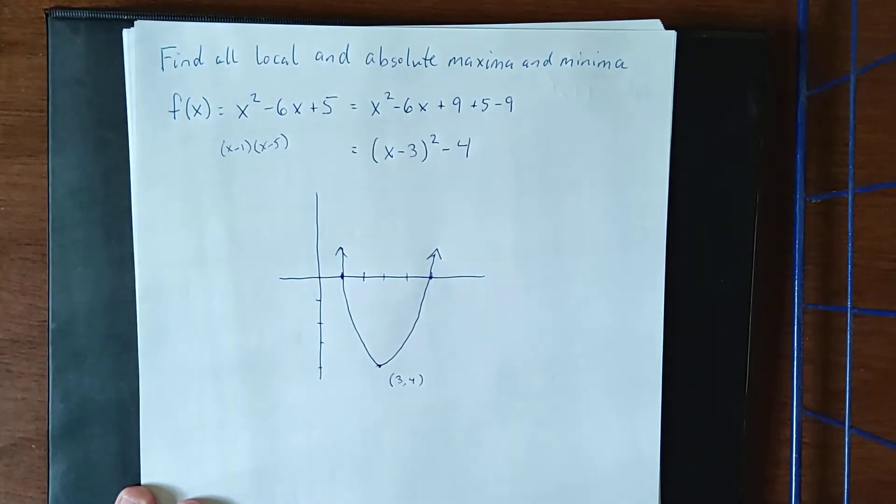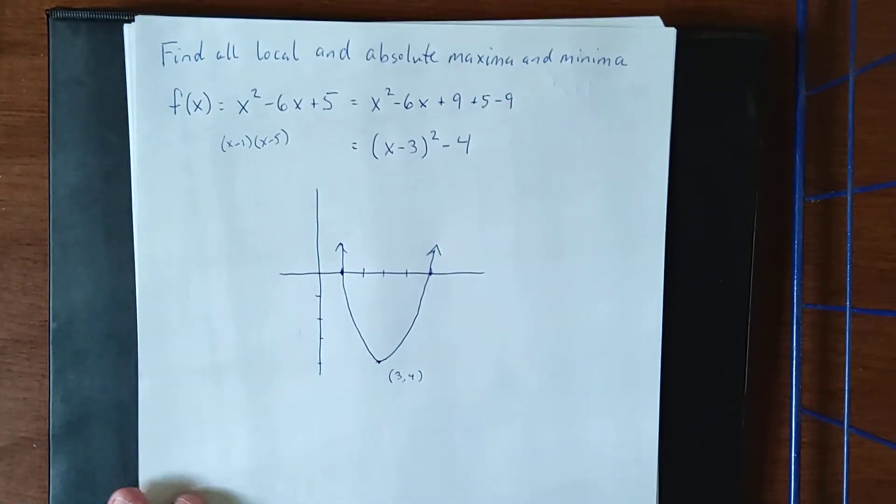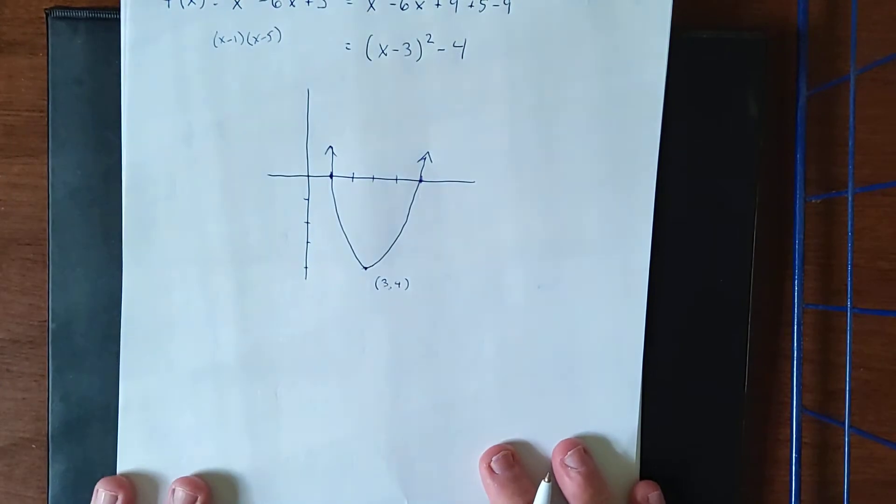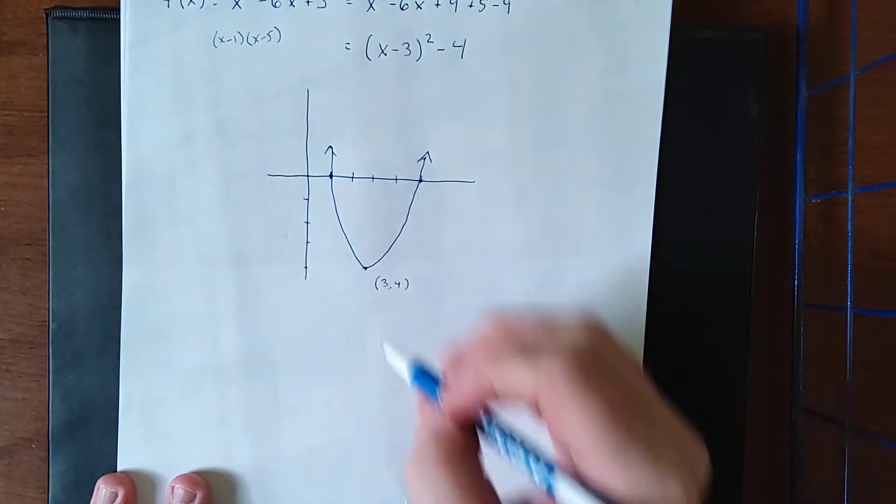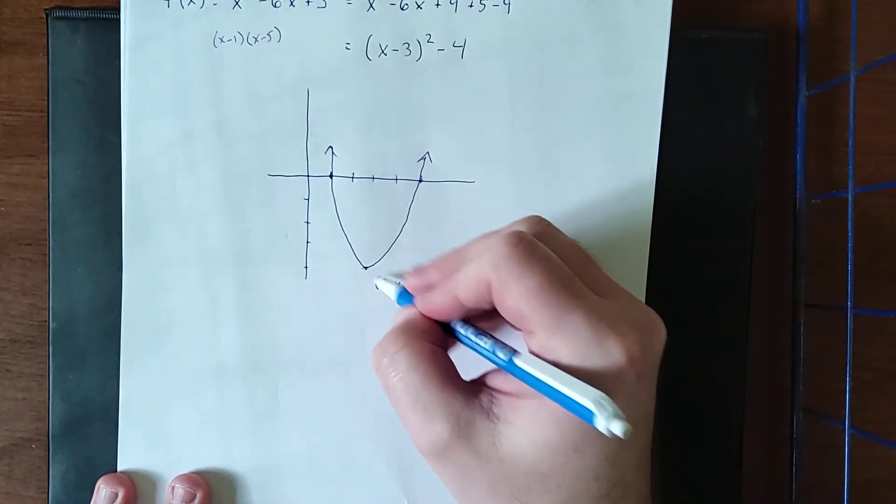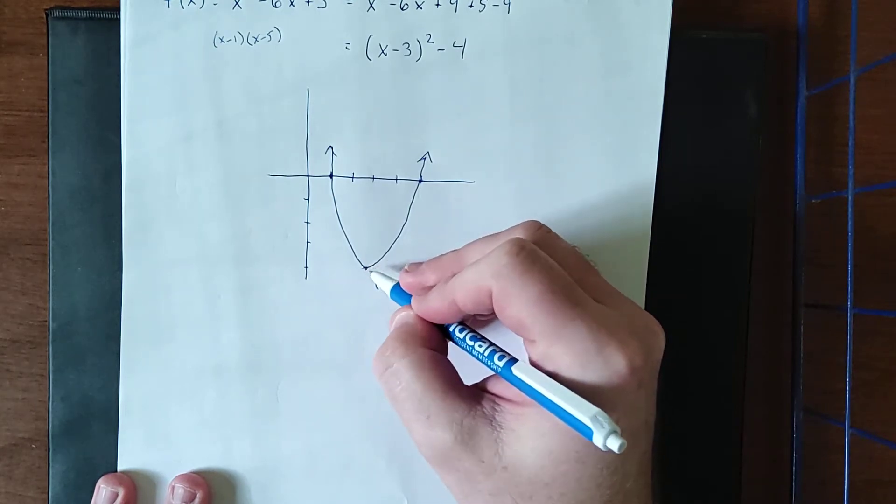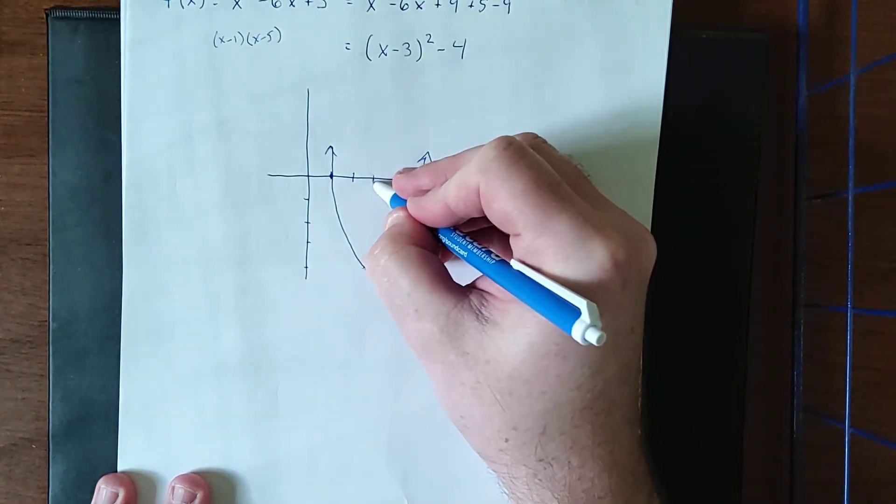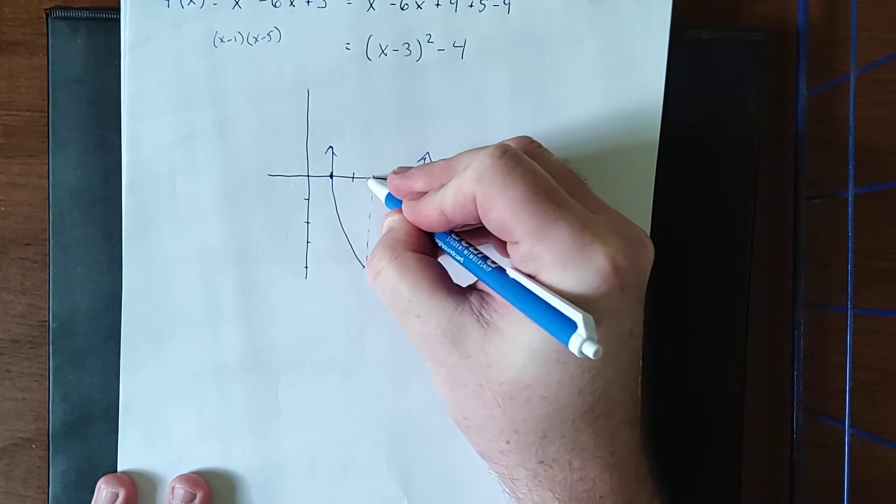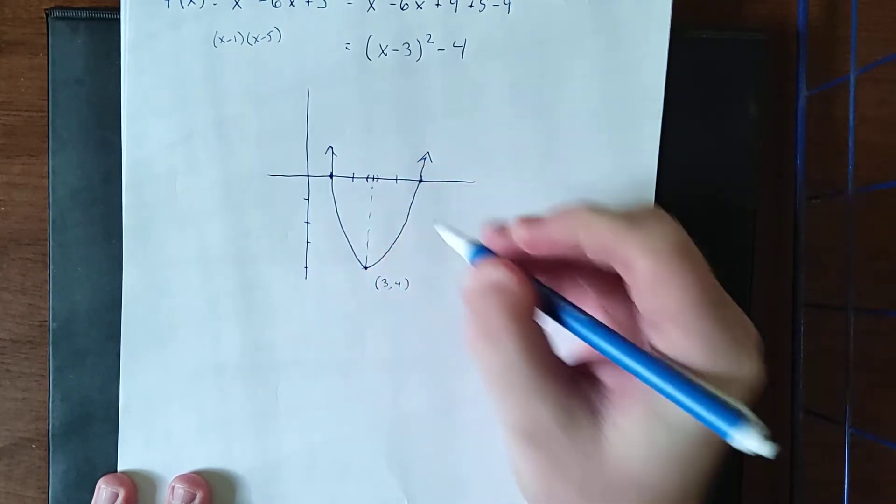Oh boy, not the best parabola I've ever drawn, but it gets the job done. So we can see from the graph of this parabola that not only do we have an absolute minimum, but this is also a local minimum since we can establish a little interval right around it where this is the lowest point.